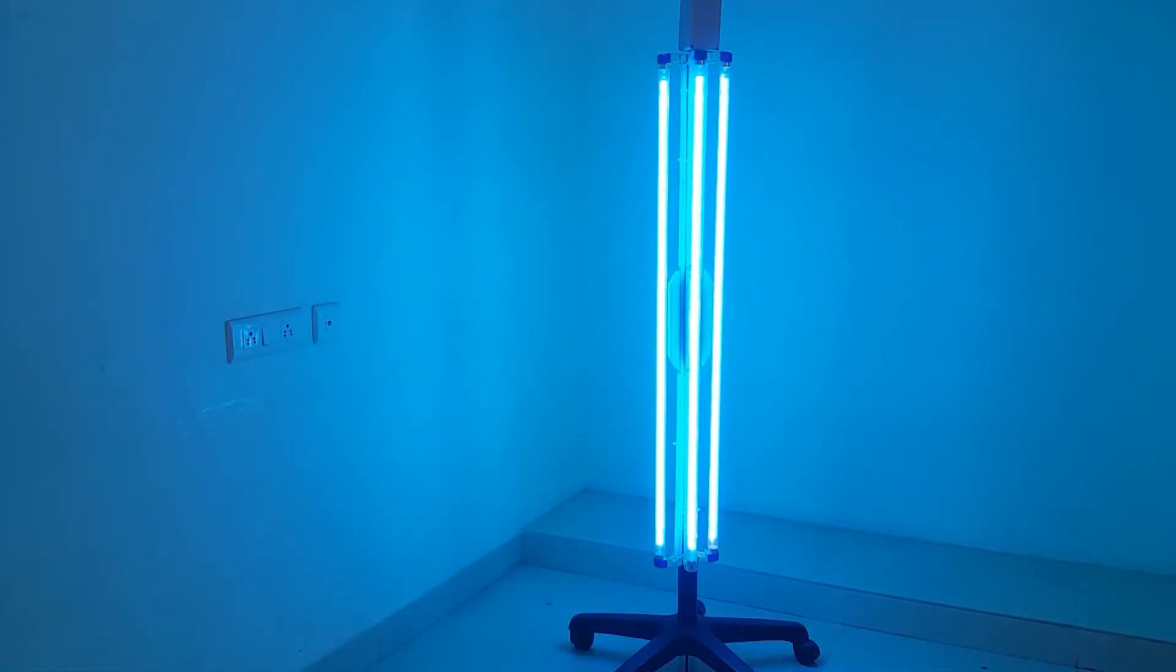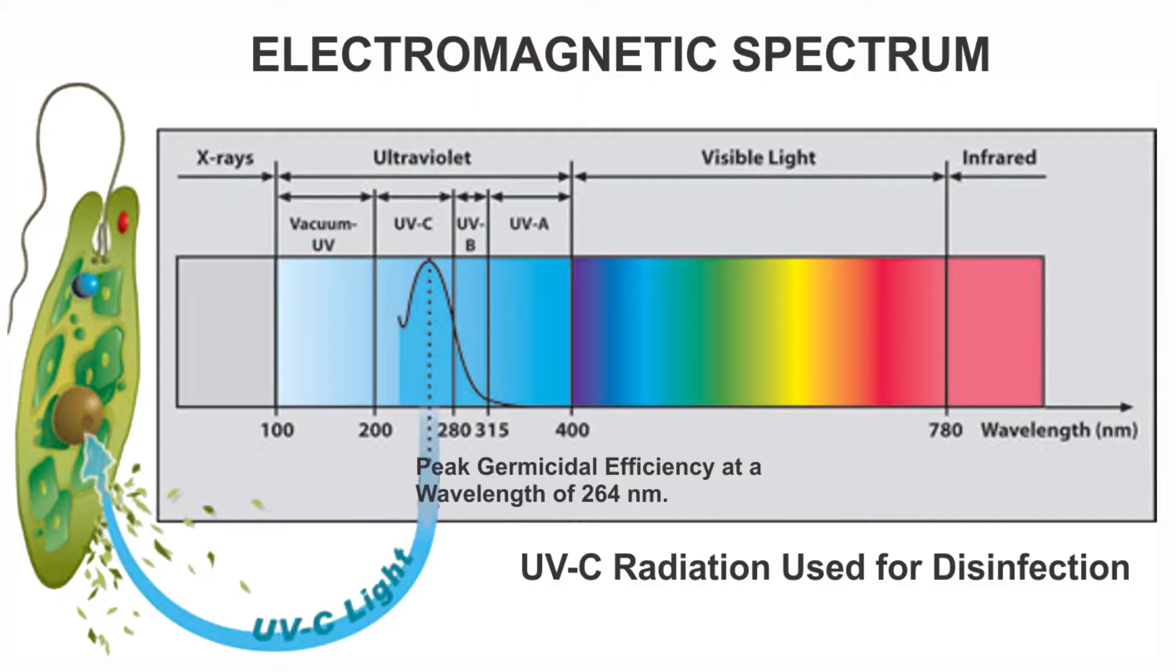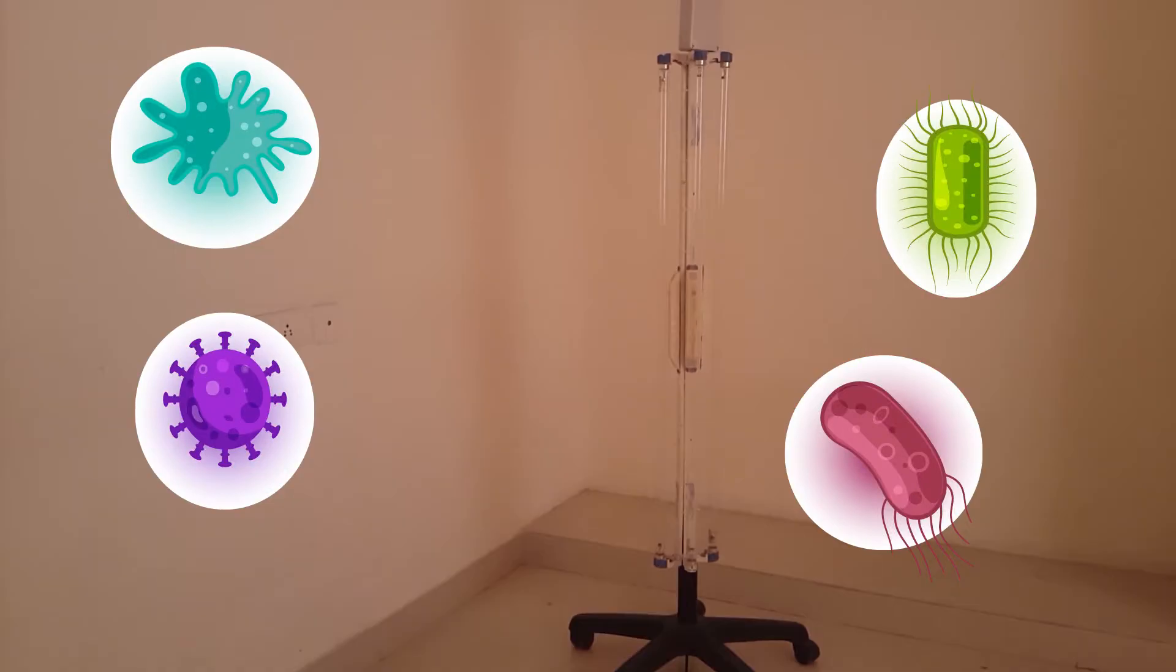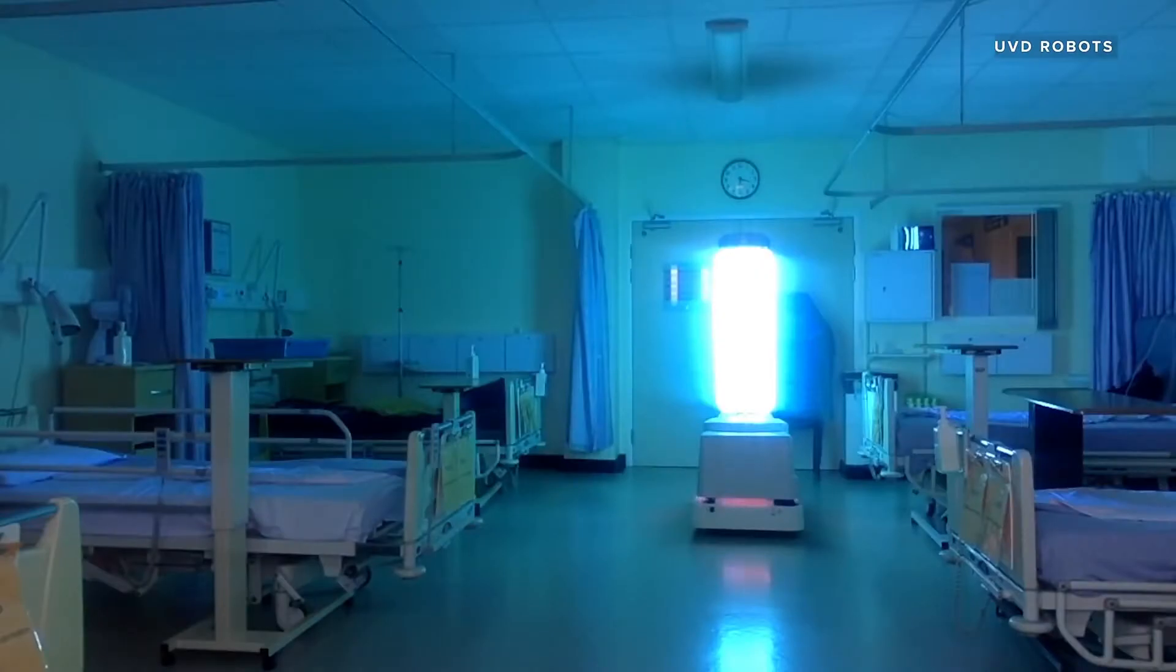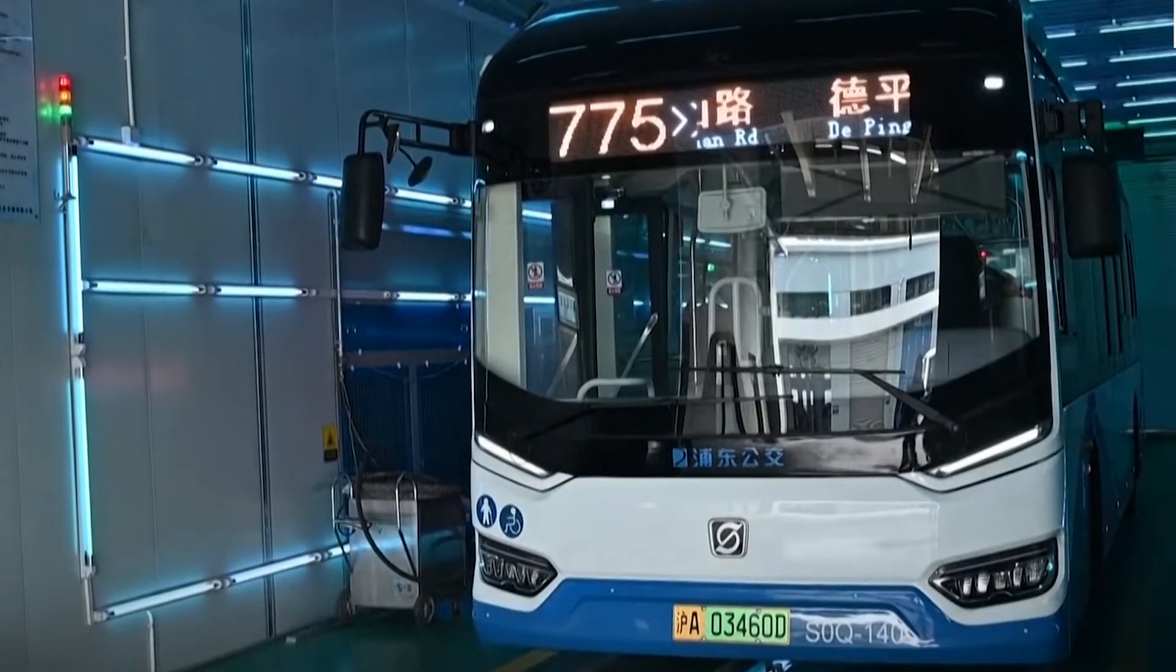UVC at a wavelength of 254 nanometers has the efficacy to kill virus, bacteria and spores. It has been used during the SARS coronavirus outbreak and even COVID-19 to sanitize large areas.